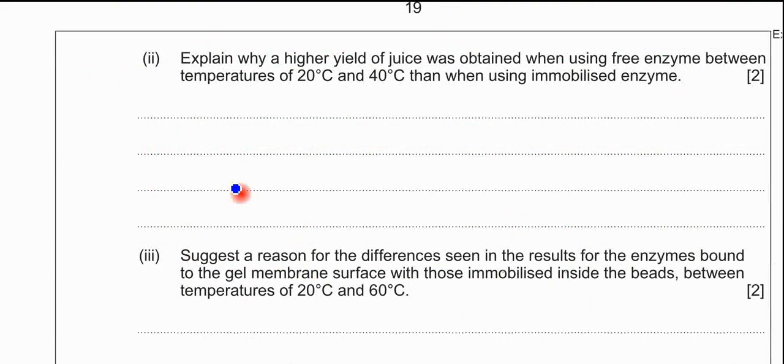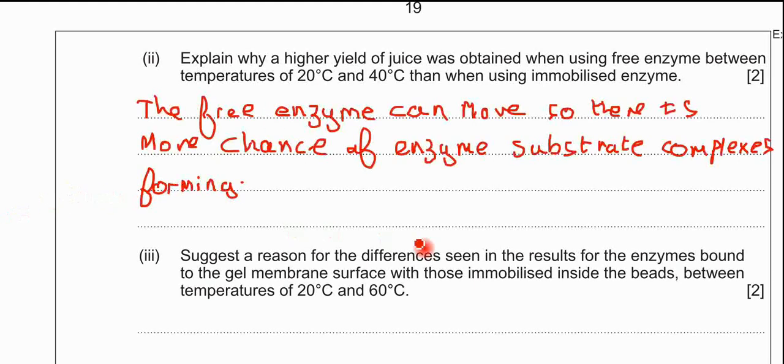Part two: explain why a higher yield of juice was obtained when using a free enzyme between temperatures 20 and 40 degrees than when using immobilized enzymes. This is really looking at how many enzyme substrate complexes can be formed. In order for those to form, you'll have to have movement of the enzyme and the substrate to actually collide and form an enzyme substrate complex. The answer is that the free enzyme can move and you get an increased chance of enzyme substrate complexes being formed.